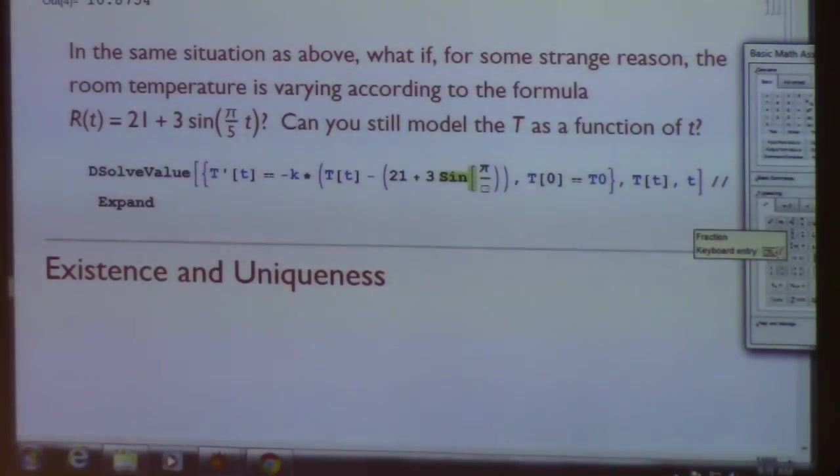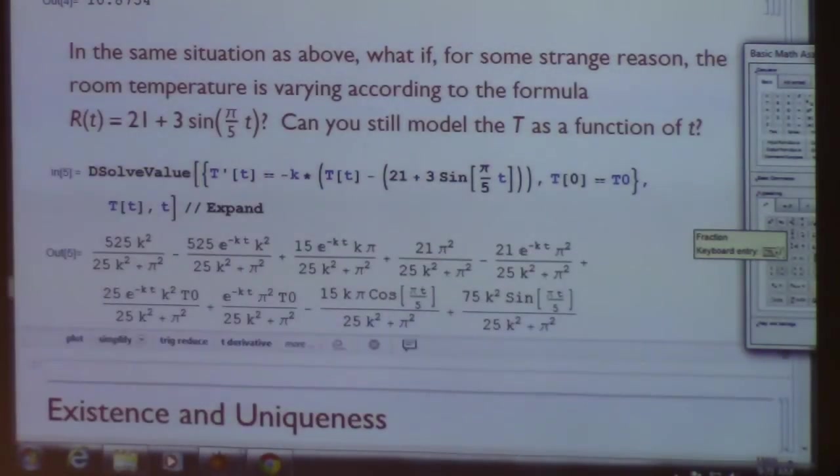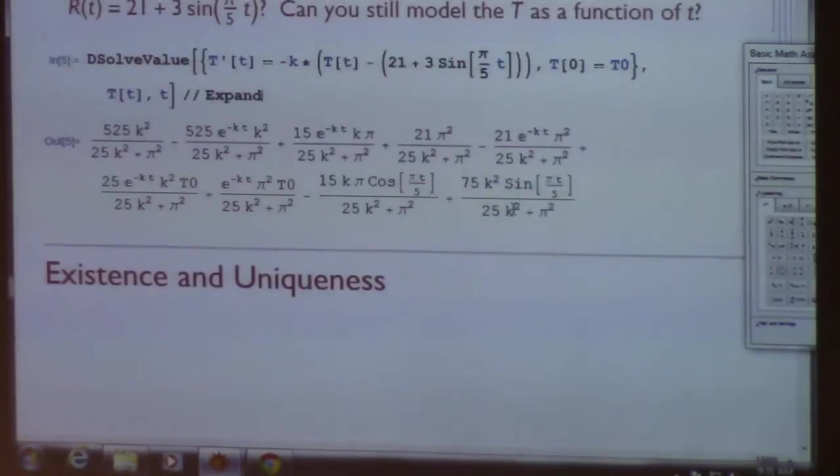The instantaneous rate of change of the temperature capital T with respect to little t, in a sense is still proportional to the difference between the temperature of the coffee and the room temperature. It's a proportionality that occurs at any instant in time. Not only is the coffee cooling, but the room temperature is changing constantly. Can D-solve value do it? I don't know. I guess so. Wow, look at that. I don't want to do that one by hand. Actually theoretically I could do it by hand using some techniques in section 1.8, but it would be a big thing, you can tell.